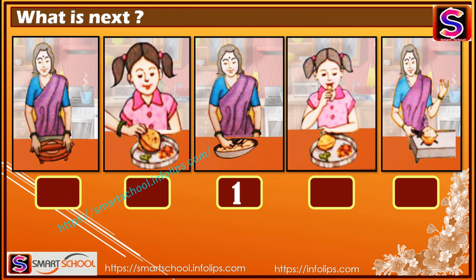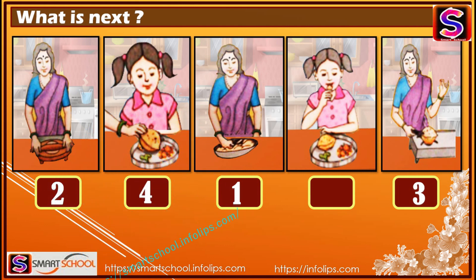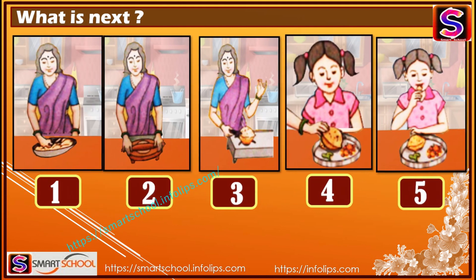Let's see the next example. First we're gonna prepare the dough, then make the chapati, then cook it, then serve it, and then eat it. So the actual sequence is gonna be like this: one, two, three, four, and five.